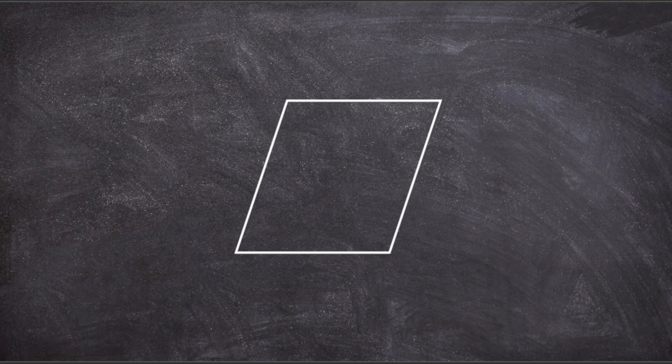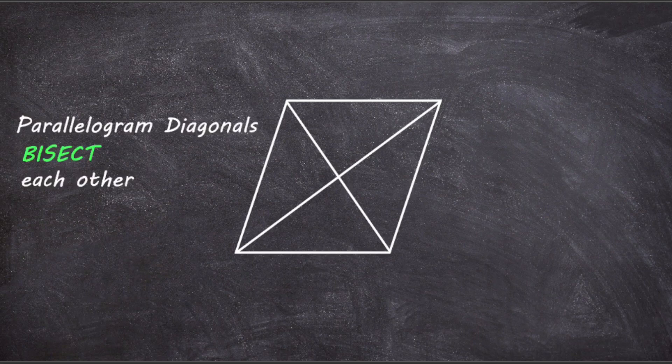Here we have a parallelogram. Let's add in the two diagonals that join opposite corners. In this video we're going to be examining the diagonals of parallelograms to see why the statement 'parallelogram diagonals bisect each other' is true. First of all, let's give each diagonal a separate label. We'll call the top left to bottom right diagonal PQ, and we'll call the diagonal which goes from bottom left to top right RS.